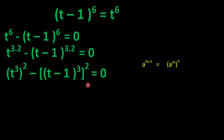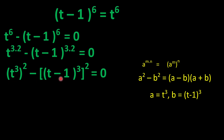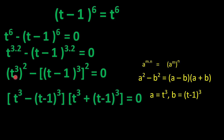Now we apply the difference of squares identity: a^2 - b^2 = (a - b)(a + b). Here a = t^3 and b = (t-1)^3. Expanding, this becomes (t^3 - (t-1)^3) multiplied by (t^3 + (t-1)^3) equal to 0.